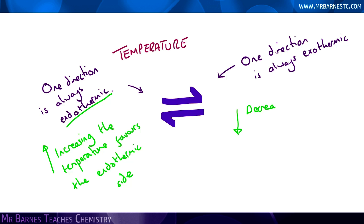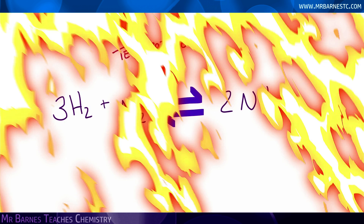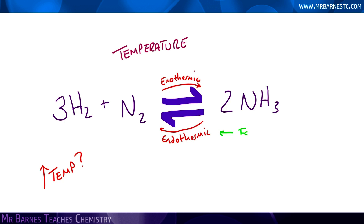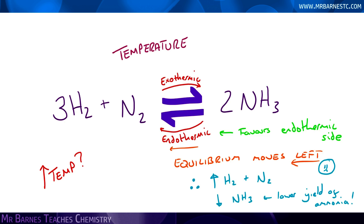Similarly, if you decrease the temperature, it will favour the exothermic direction. If you look at the Haber process, where hydrogen and nitrogen react to make ammonia, the forward reaction is exothermic and the backwards reaction is endothermic. So if I increase the temperature, it favours the endothermic reaction. Therefore, it's going to move the equilibrium to the left and I'm going to get more hydrogen and nitrogen forming, and therefore less ammonia — so the yield of ammonia will decrease.